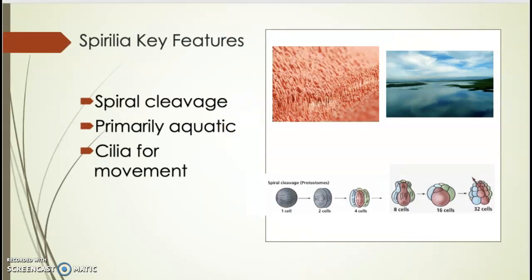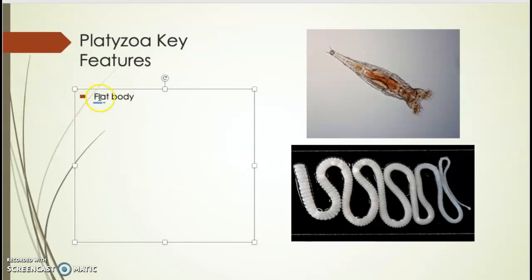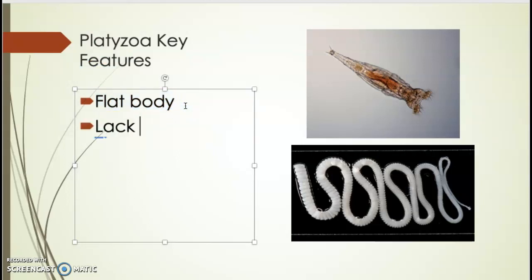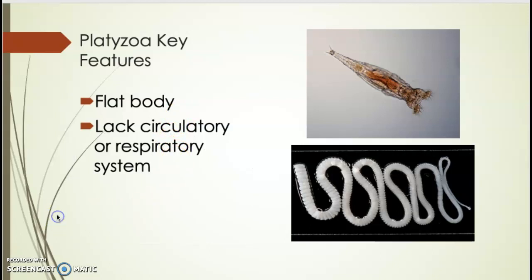Within Spiralia there are two subcategories. The first is Platyzoa. Key features of Platyzoa include having a flat body and lacking any true circulatory or respiratory systems. You won't see a heart, veins, arteries, or lungs. They still exchange gases and circulate nutrients, but mostly through diffusion. They have cells and tissues but lack these organ systems.